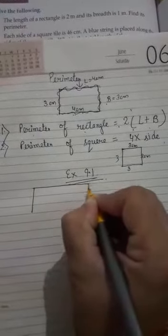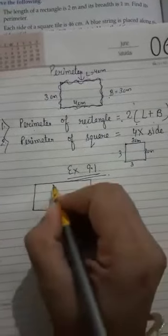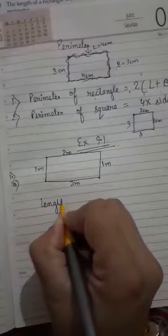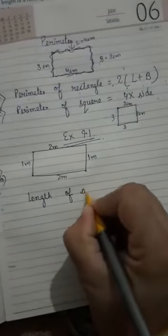Now we start exercise 9.1. First part: The length of a rectangle is 2 meters and its breadth is 1 meter. Find its perimeter. The rectangle shape is that way: length given 2 meters and breadth given 1 meter. That line also 1 meter, 2 meters. Now find. First write: length of a rectangle is equal to 2 meters.